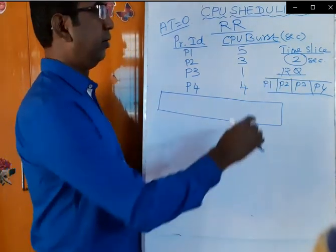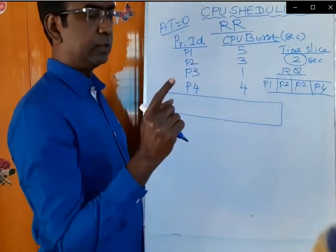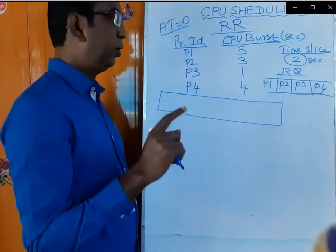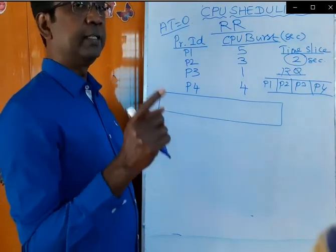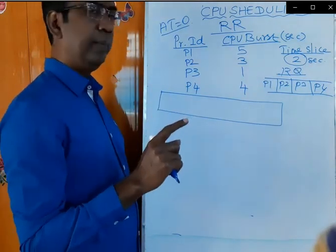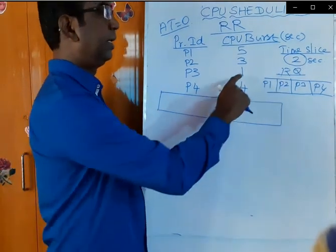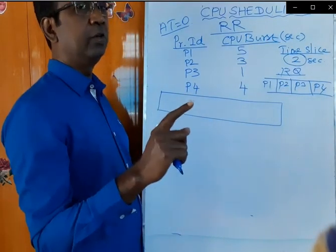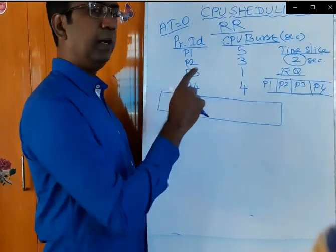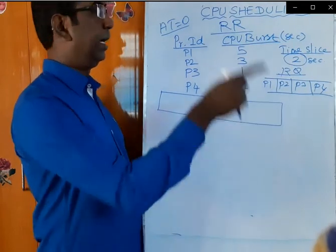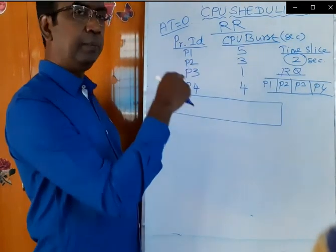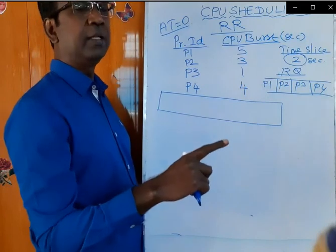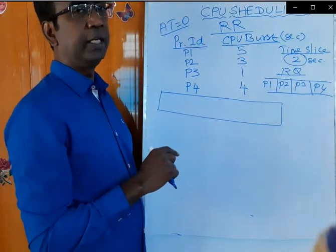So the execution order will be: P1 will execute for 2 seconds, then P2 will execute for 2 seconds, then P3 — but it only needs 1 second, so it will execute for 1 second — then P4 will execute for 2 seconds. Again P1, then P2, then P3, then P4, and so on, continuing until all processes have completed their work.